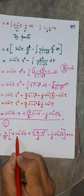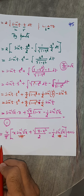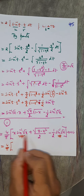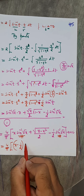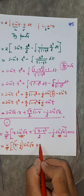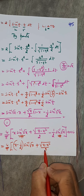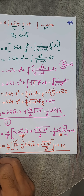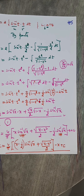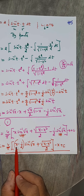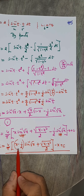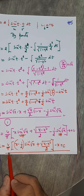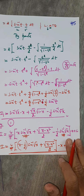Taking sin⁻¹√x common: (4/π) times [(x − 1/2)·sin⁻¹√x + √(x−x²)/2] minus x plus c. Simplifying further: (4/π) times [(2x−1)/2 · sin⁻¹√x + (1/2)·√(x−x²)] minus x plus c. This is the required integral — a lengthy but straightforward process.